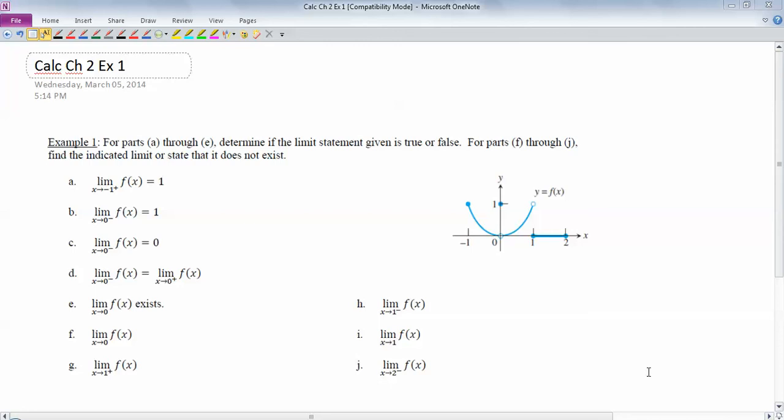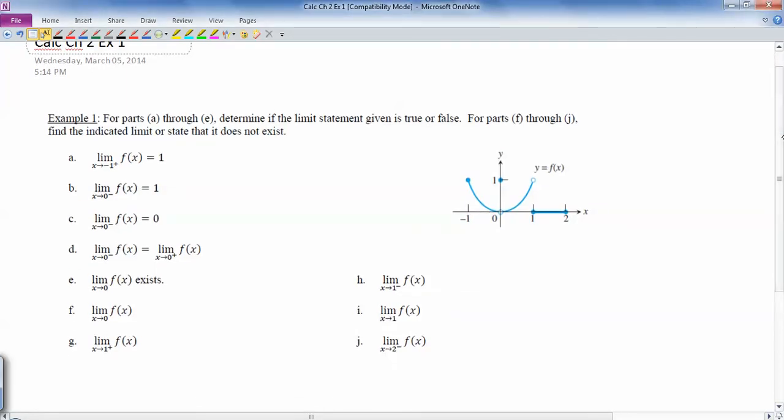So this is the Calculus Chapter 2, Example 1. And so this is just evaluating a bunch of limit statements if you're given a graph. And for these, these are just true or false questions. So what I want to do, I know you can probably just look at the graph and get a lot of these quickly, but what I want to do is try to look at each limit equation and picture what it's trying to say.